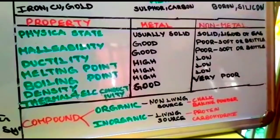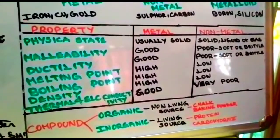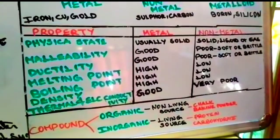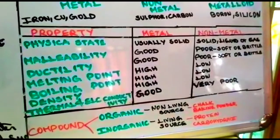What does metalloid mean? Metalloid has the property of both a metal and a non-metal.